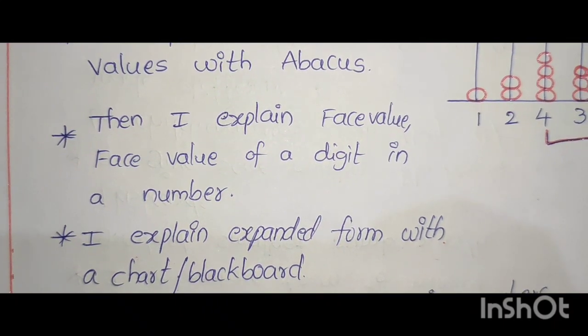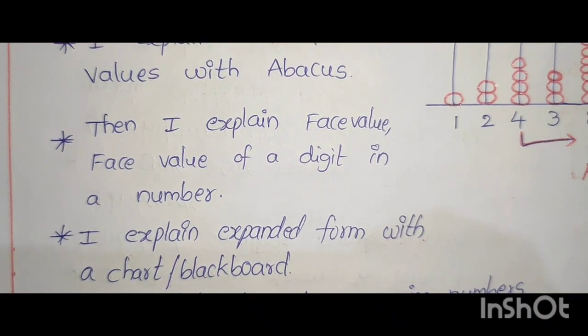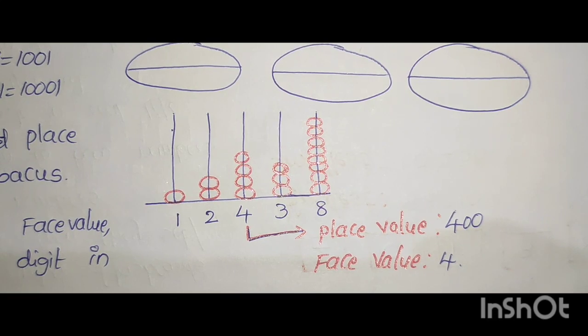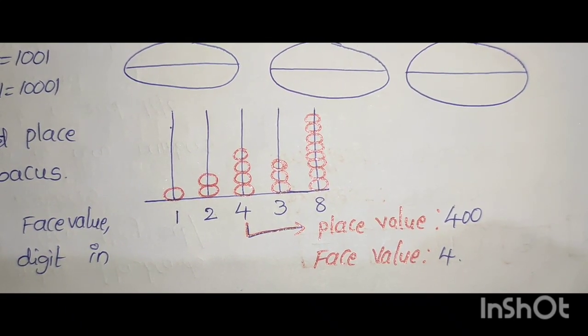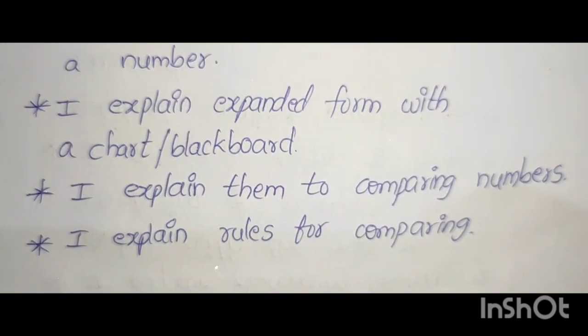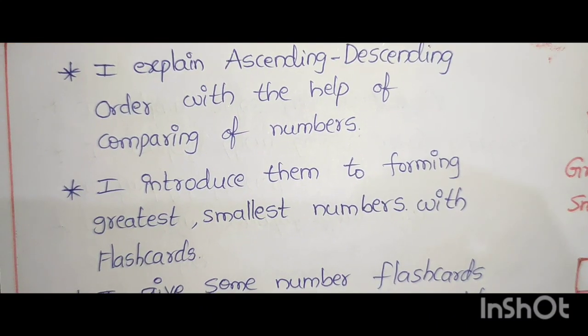Then I explain face value. Face value of a digit in a number. I explain expanded form with a chart. Abacus: Place value 400, Face value 4. Like this I give more diagrams. I explain expanded form with a chart or blackboard.